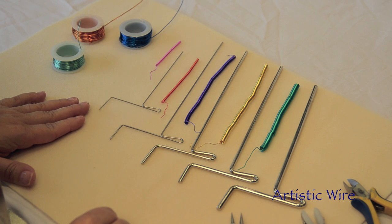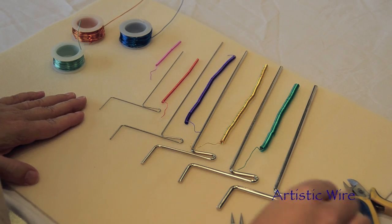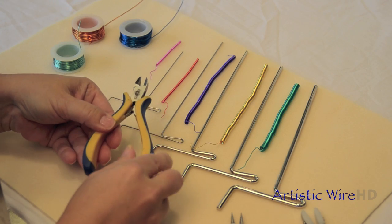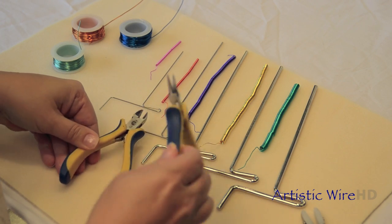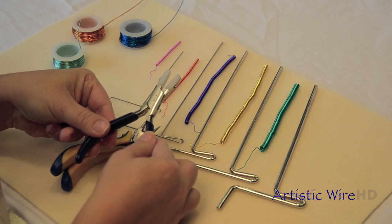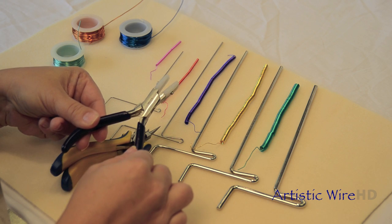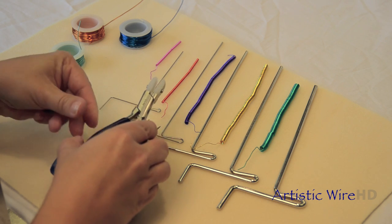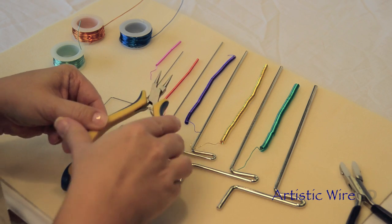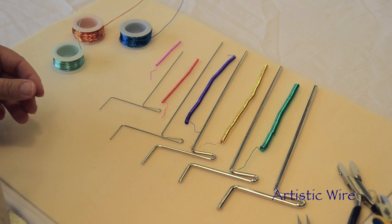Now before I choose the size of rod that I want to work with, I do want to point out that there are some tools that you will need to purchase separately. Your wire cutters, round nose pliers, and nylon jaw flat pliers will be essential when you are doing any type of wire working, especially when you're using the Artistic Wire Deluxe Coiling Gizmo.